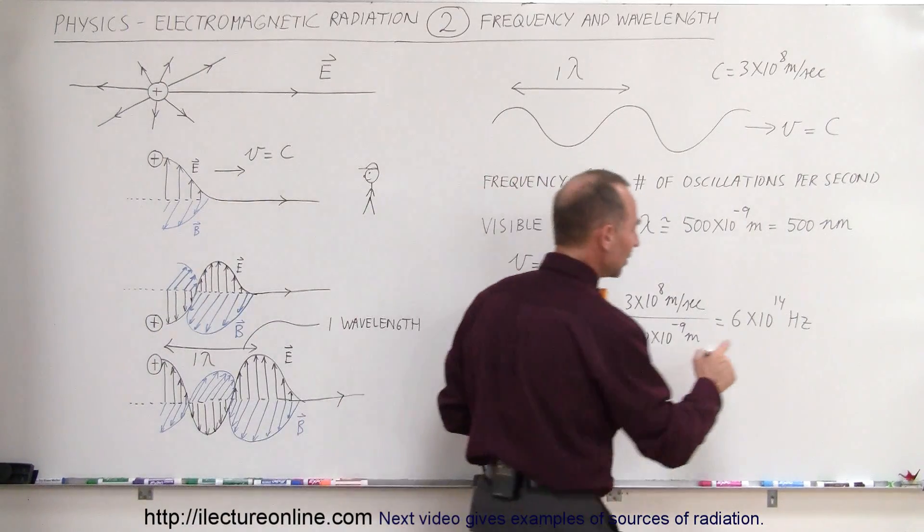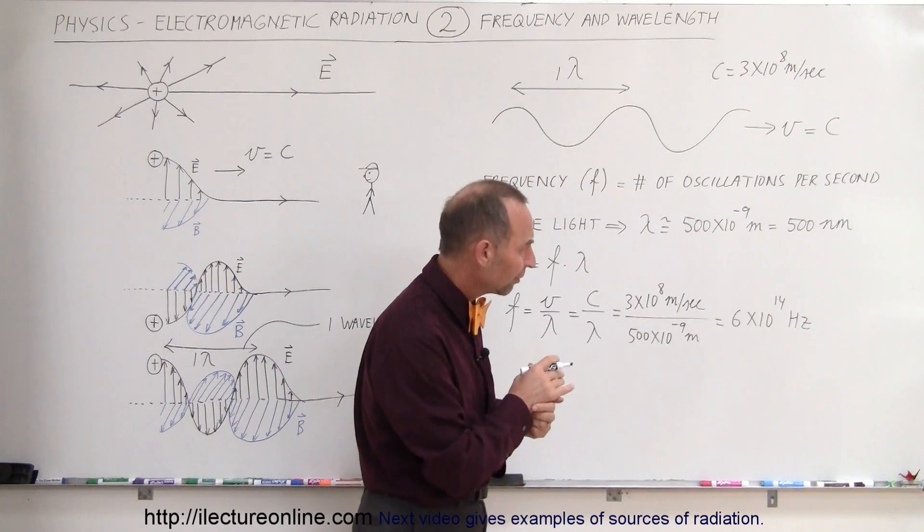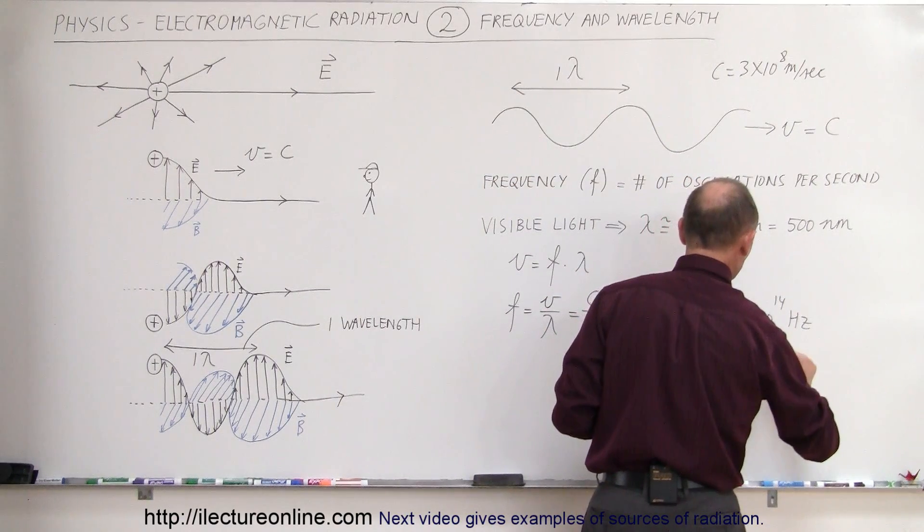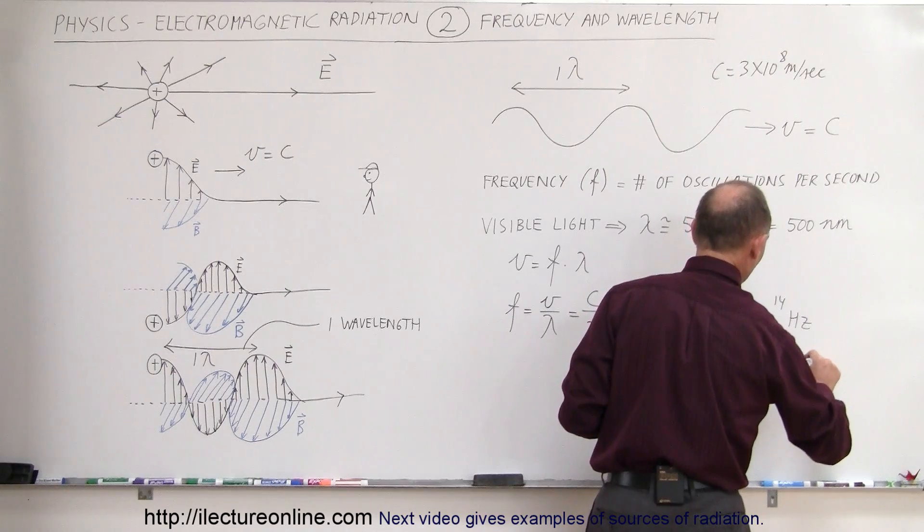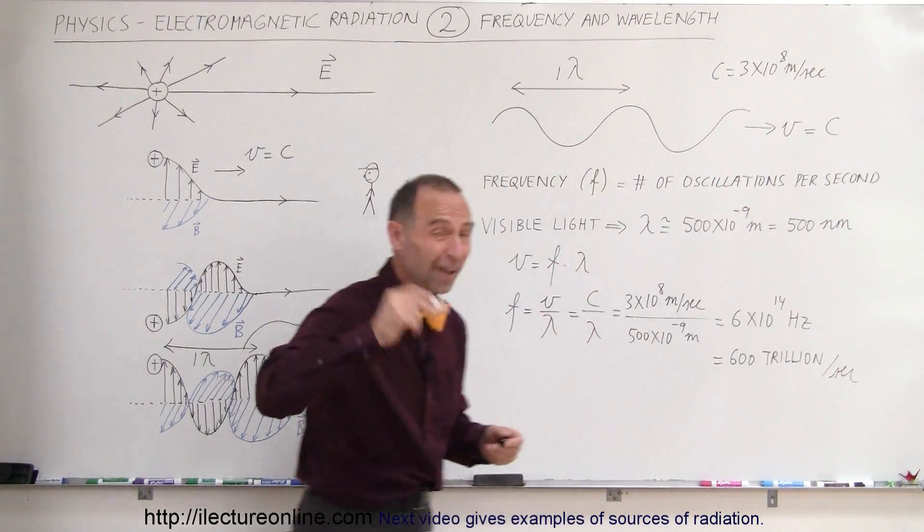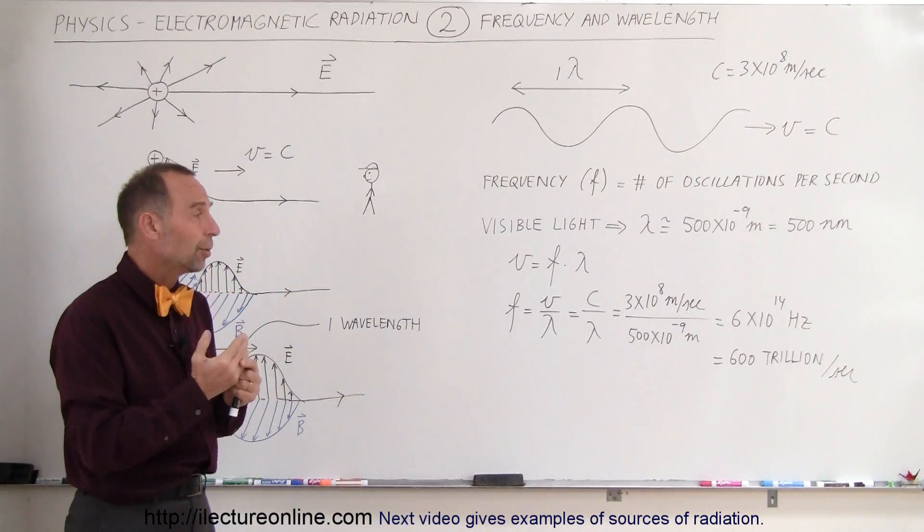That would be, let's see here, 10 to the 9th is billion, 10 to the 12th is trillion. That would be equal to 600 trillion cycles, or oscillations, per second. That's an enormously fast oscillation. That is such a high number.